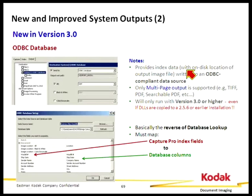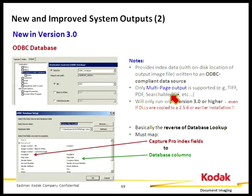It provides index data with the location of the output image file written to an ODBC-compliant data source. Because we're only writing one single entry for a document to an ODBC database, we only support multi-page output: TIFF and PDF, searchable PDF. To make this useful, you should have a column in your database that has the image location. Some ODBC databases store actual image data as a blob, but we don't do that — we only output the path and file name of where that document is stored on disk.